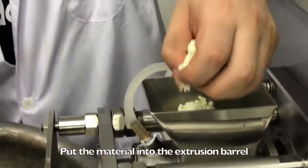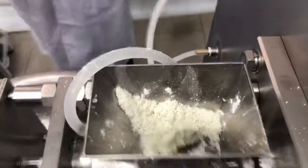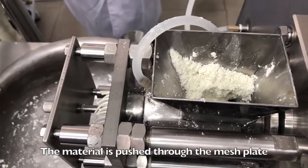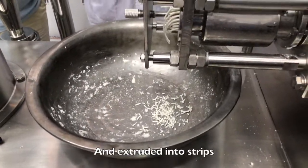Put the material into the extrusion barrel. The material is pushed through the mesh plate and extruded into strips.